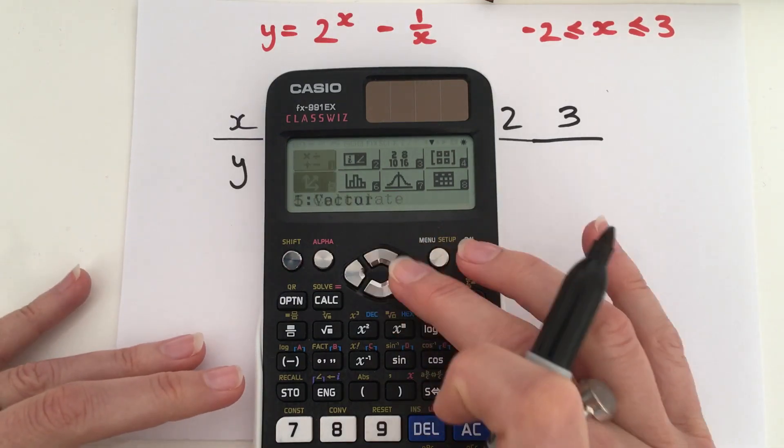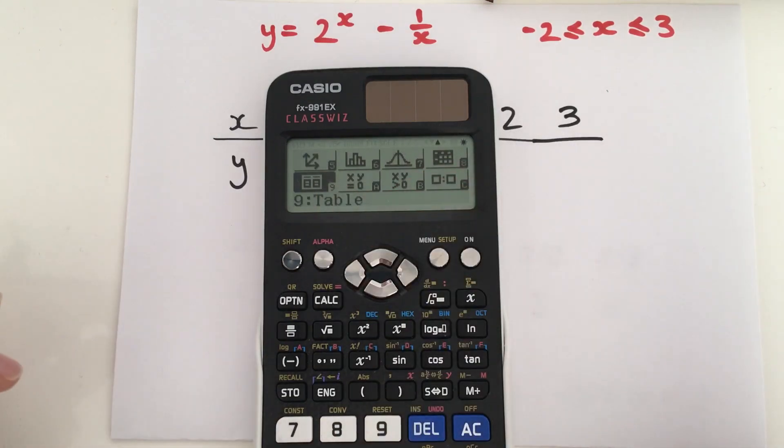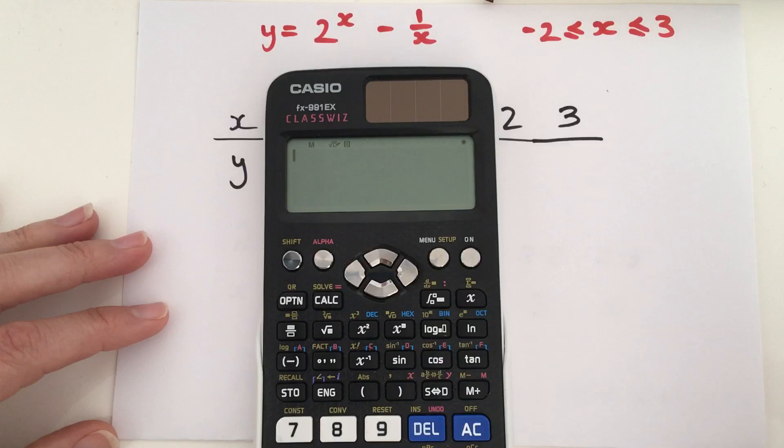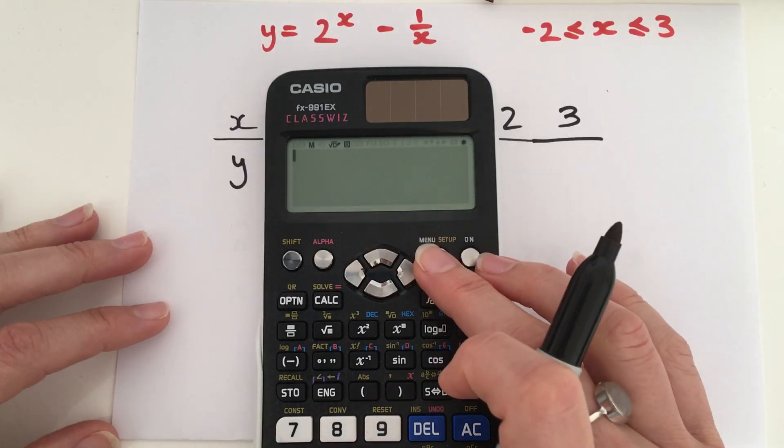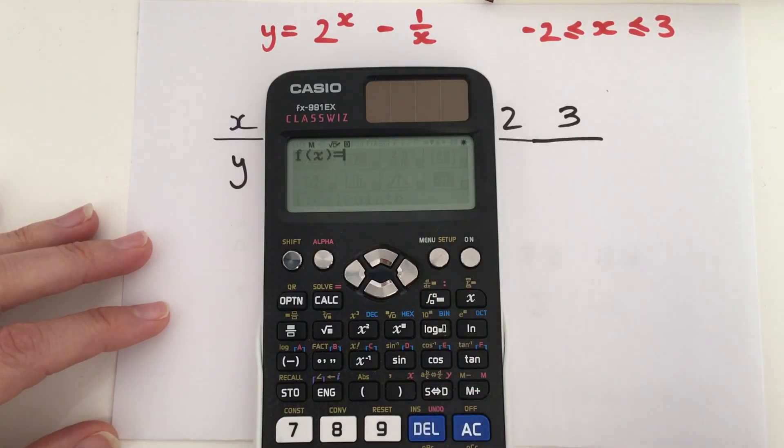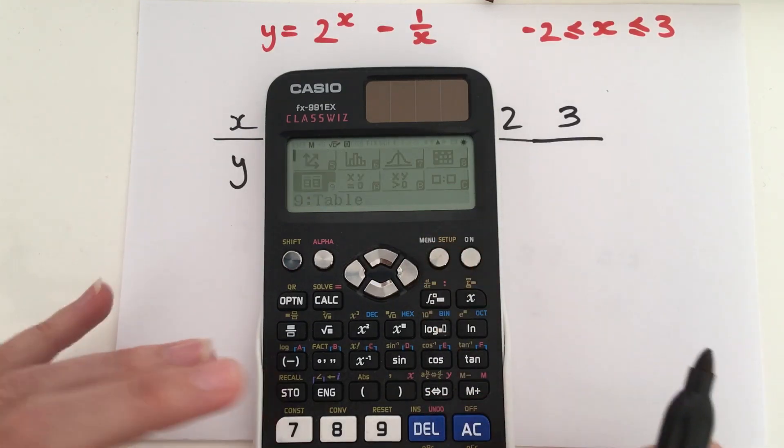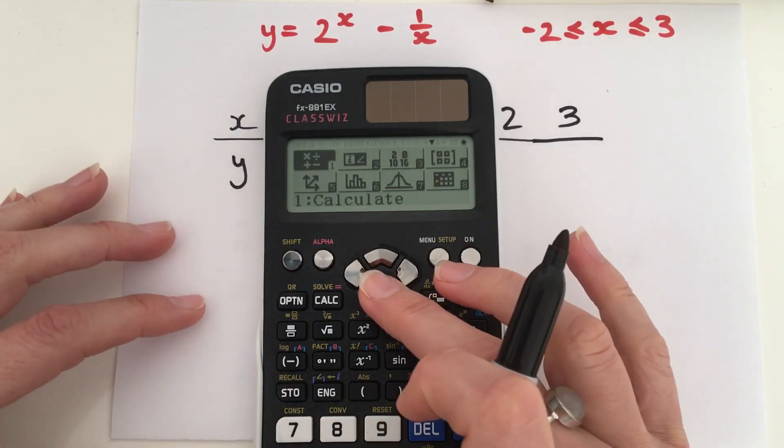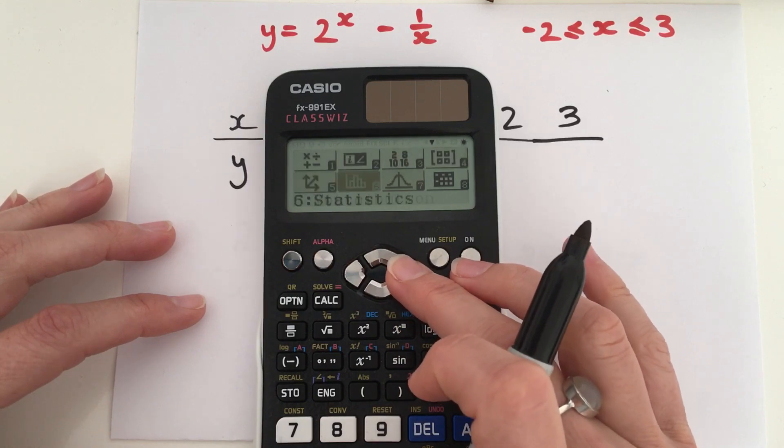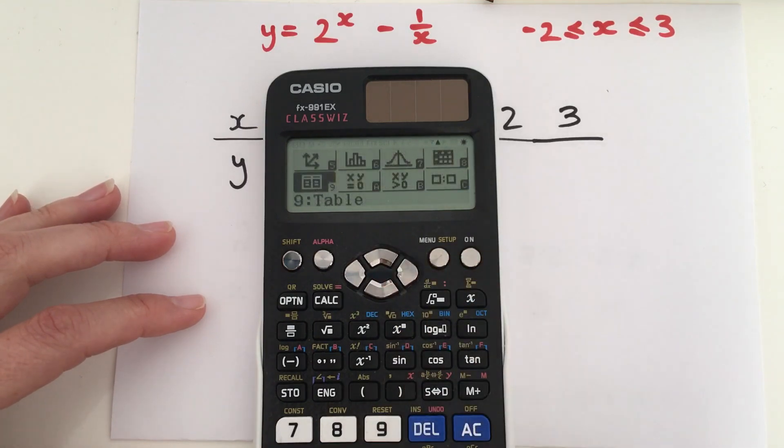You can either scroll across to find the table function, and my table function is function number 9, or if you know it's number 9, then you can just press menu, press 9, and it'll take you there straight away. So, if you don't know which one it is, you can scroll across until you find the table, and then press equals.